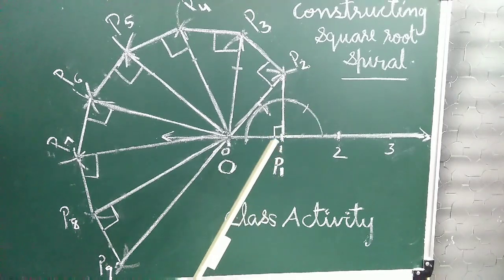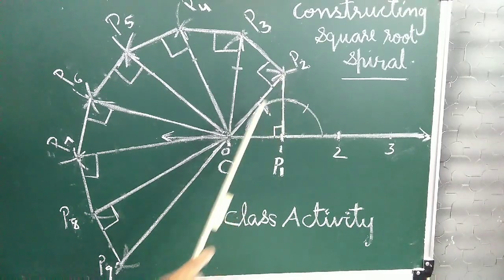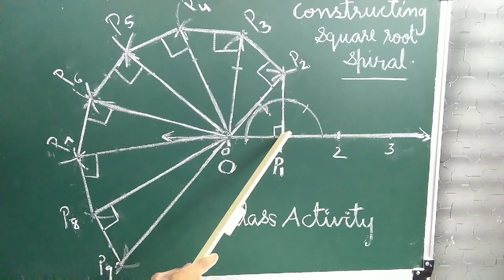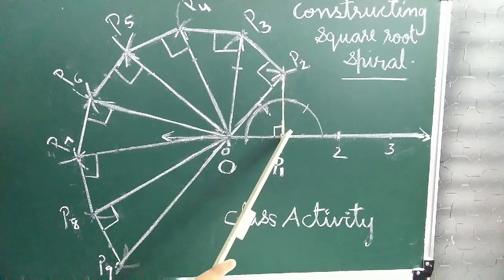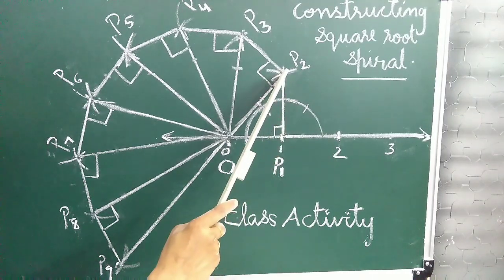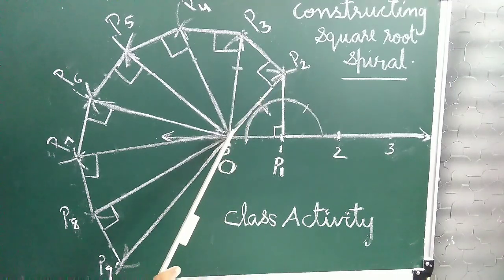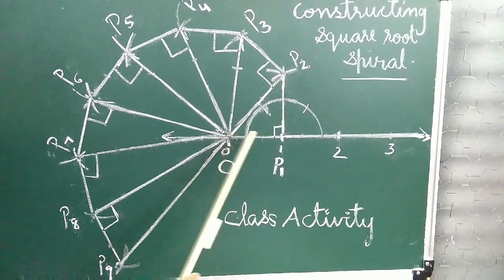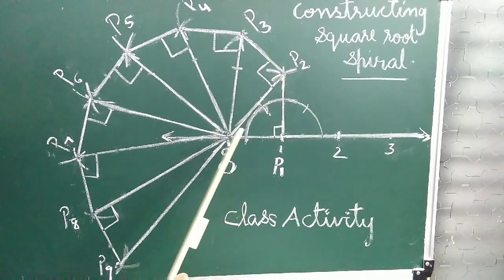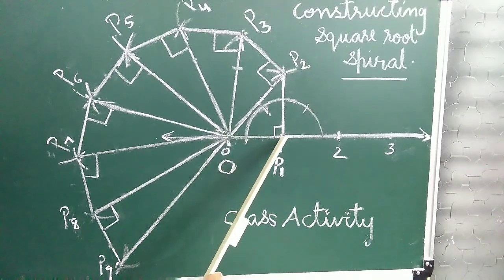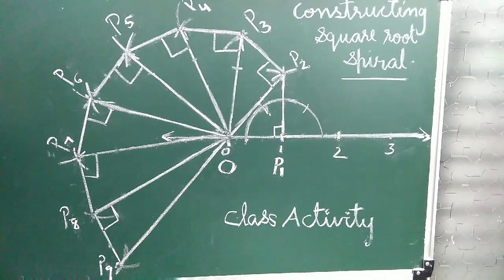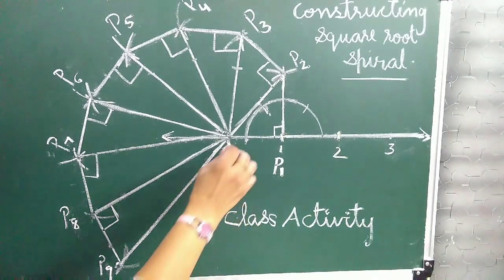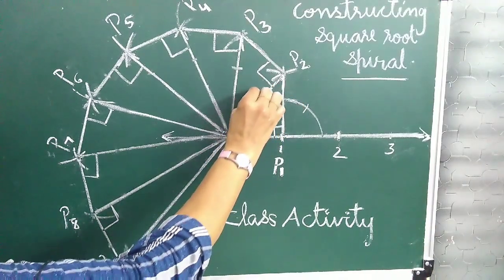P1P2 is perpendicular to OP1. Take P1P2 as one unit and join P2 to O. We get a right-angled triangle OP1P2. By using Pythagoras theorem, OP2 is the hypotenuse, and OP2 equals root 2.